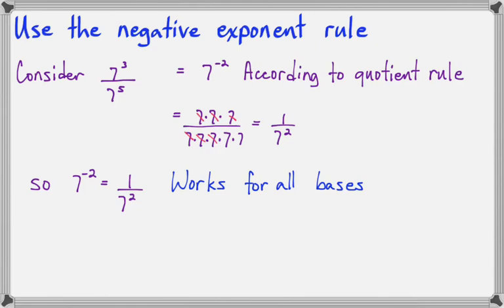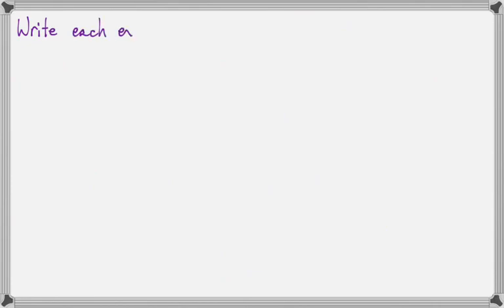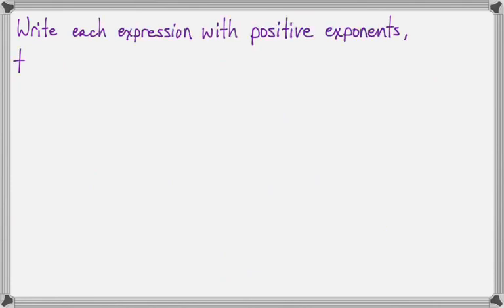Now, this works for all bases, not just 7. There's nothing special about the 7 or the 3 or the 5 here, so this rule holds in general. The negative exponent rule says that if you have a base with a negative exponent, then you can write that as 1 over base to the positive exponent. So for this exercise, we'll write each expression with a positive exponent, and then we will simplify.